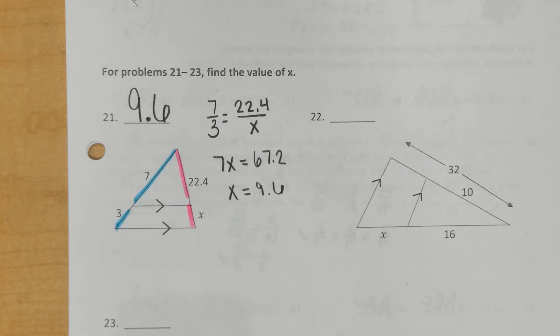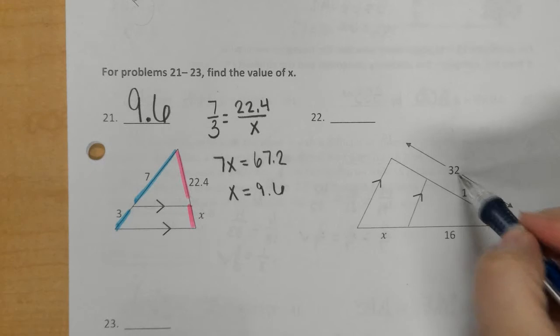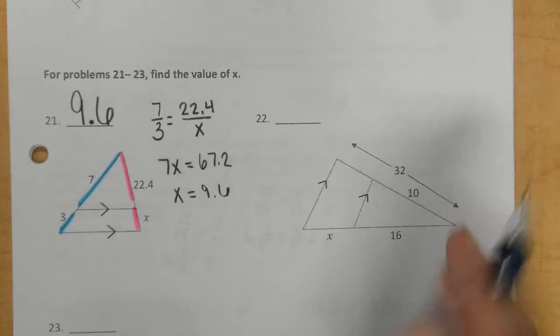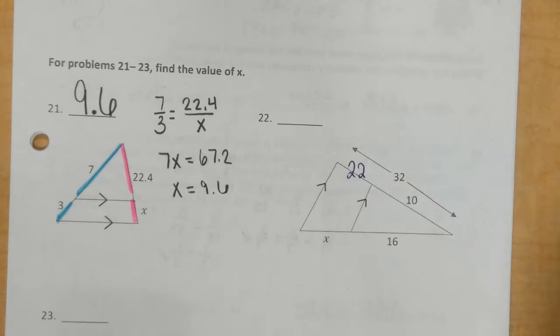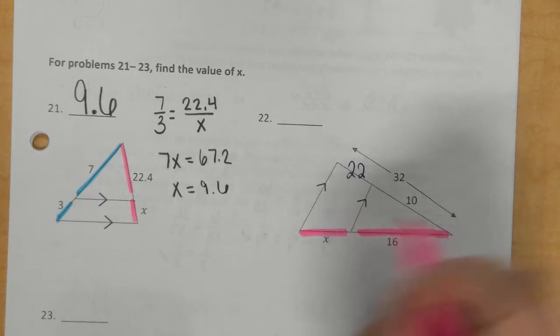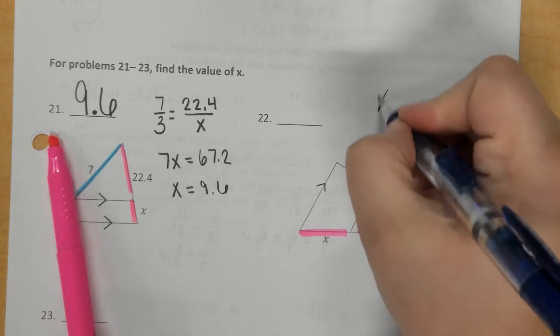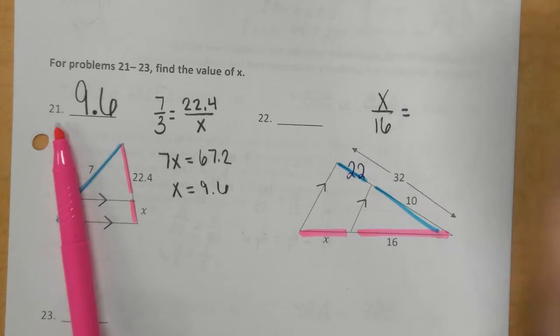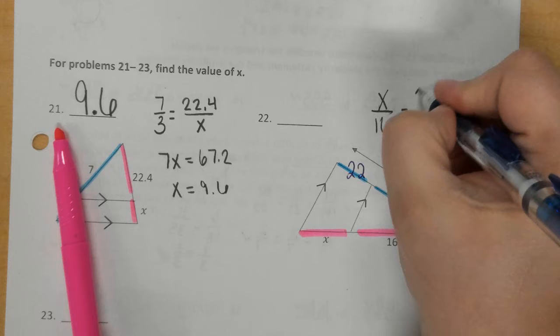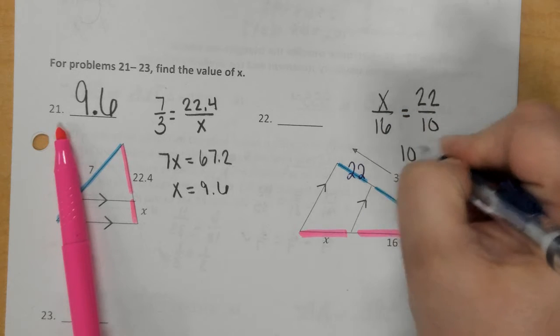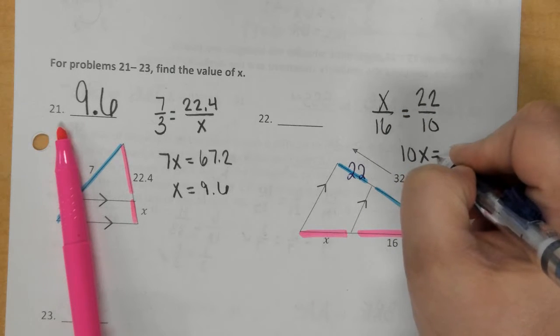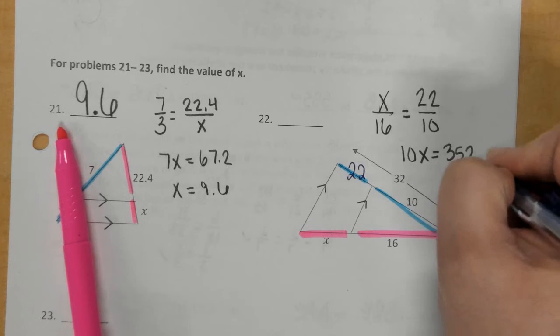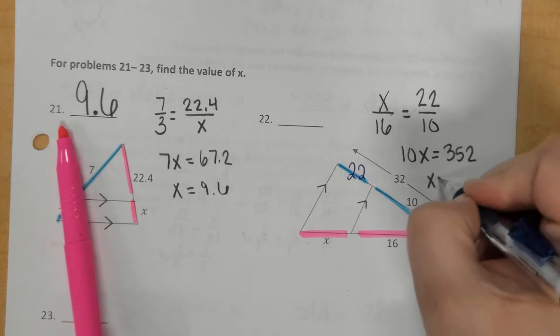For 22, I would probably go ahead and do 32 minus 10 to give me 22, and then I would go x over 16, and then 22 over 10. So, 10x equals 352, divided by 10, we get 35.2.